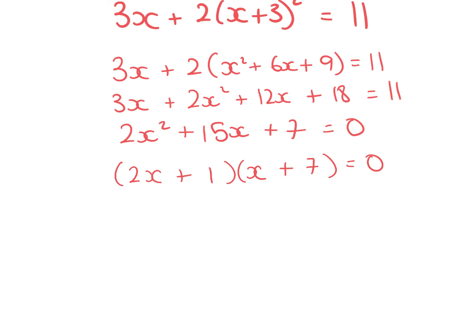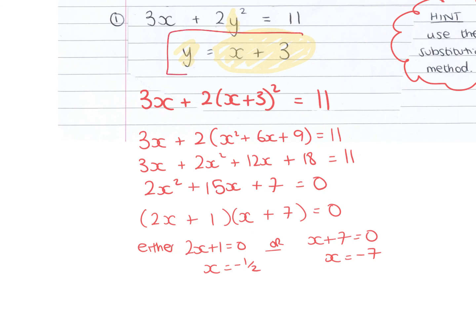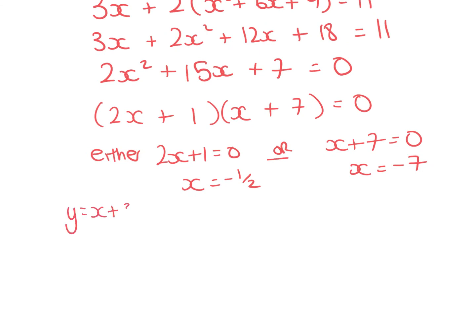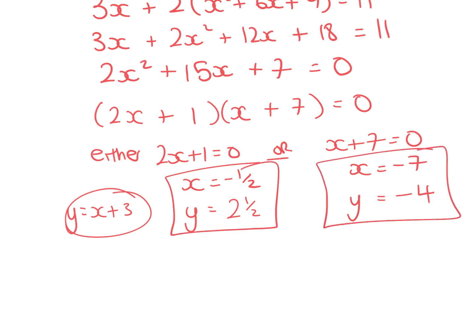And then once we've got it like that, we say either 2x plus 1 equals 0 or x plus 7 equals 0. So x equals minus 1 half or x equals minus 7. And then for each of those I need to find what y is. But from up here we know y equals x plus 3. So if x is minus a half, y is minus a half plus 3, which is 2 and a half. And if x is minus 7, y equals minus 7 plus 3, which is minus 4. So I've got my two different pairs of answers.